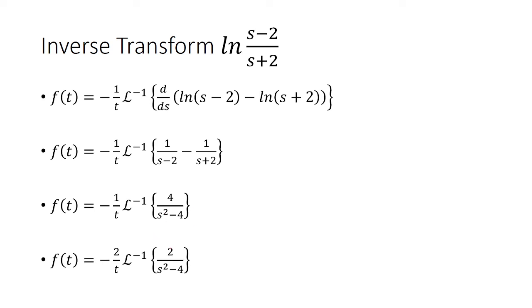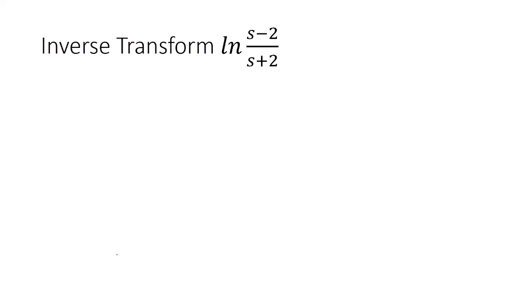So now what I did was I pulled out a 2, so 4 is obviously 2 times 2, and I pulled out the 2 in front. And so this inverse Laplace transform of 2 over s squared minus 4 is the hyperbolic sine of 2t. And so this is the inverse transform.